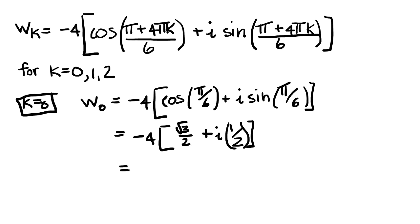Plus 1/2 times i. And when I multiply that through, that is -2√3 - 2i. So that's my first root of -64i.